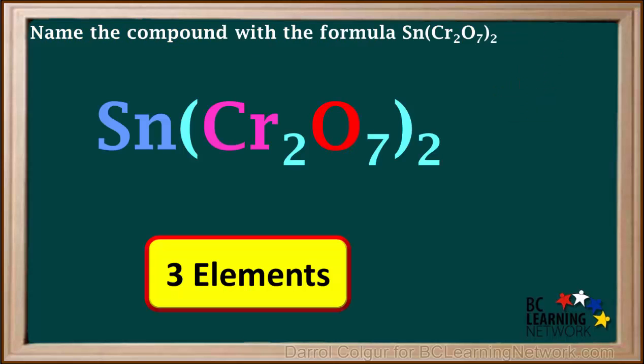We see that Sn(Cr2O7)2 has three elements: tin, chromium, and oxygen. Any ionic compound with more than two elements must contain a polyatomic ion.